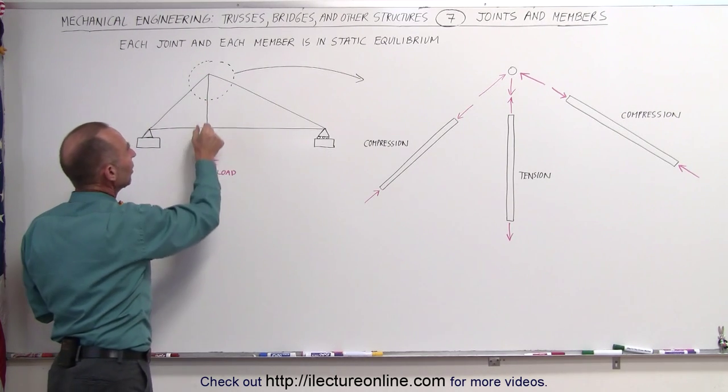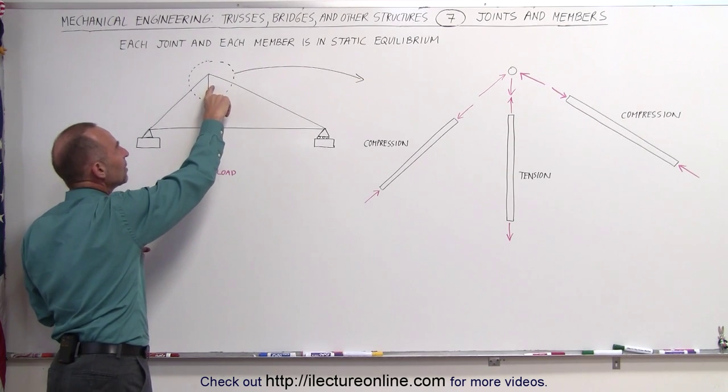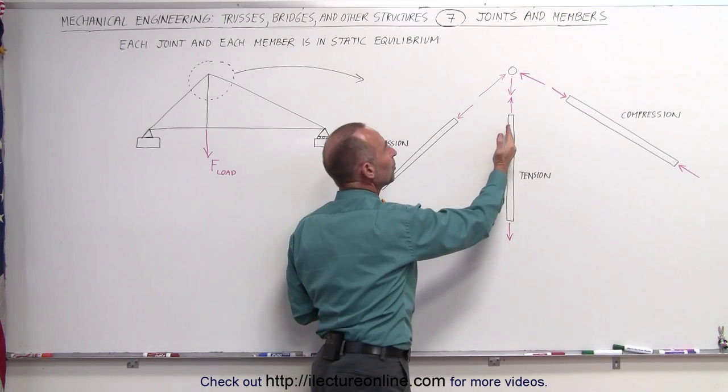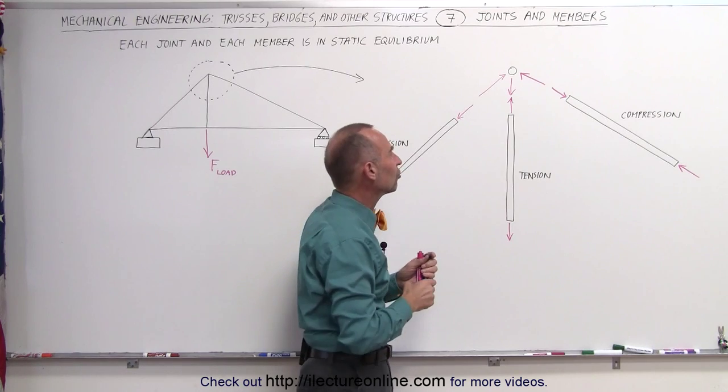Well, it makes sense to see that we would be pulling on this member right here, which means that this member would be under tension. There's a force pulling down on the member this way, and then there would be a force on the member this way from the joint, and that's the hard thing to understand.